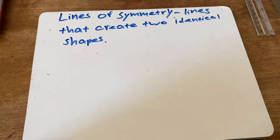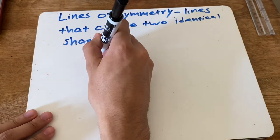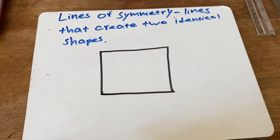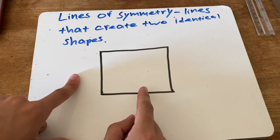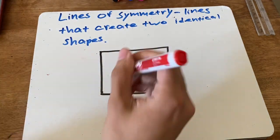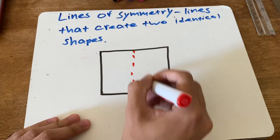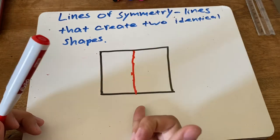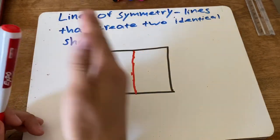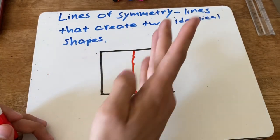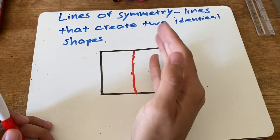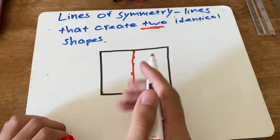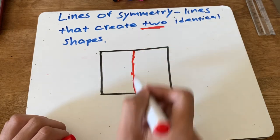Lines of symmetry — let's say we have a square, much like our warm-up. This square has a lot of lines of symmetry. If I cut it like this, this red line is a line of symmetry, because if I cut it in half, the left side of the square is the same as the right side. That is what lines of symmetry are: it creates two identical shapes.